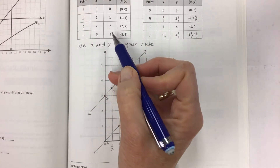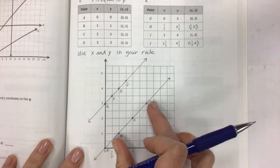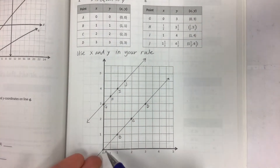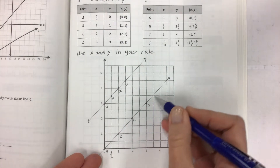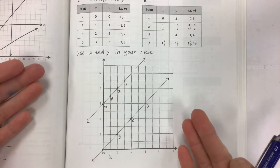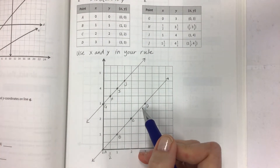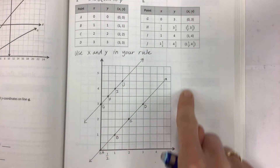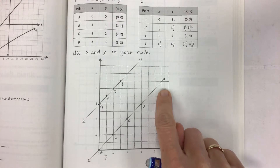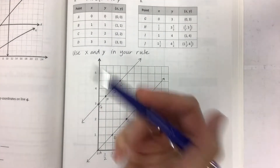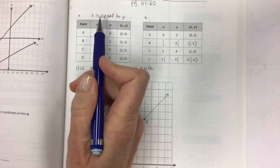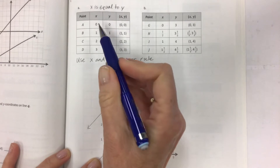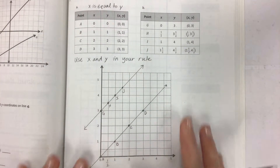One important note: sometimes points will not be on the visible graph. If you follow the rule, you should be able to find any point on the line. For example, if the coordinate plane only goes up to 5, you can still go off the plane and stay on the line. You could say 10 and 10, or 12 and 12, or 20 and 20 will fall on this line — because you're using the rule X equals Y.